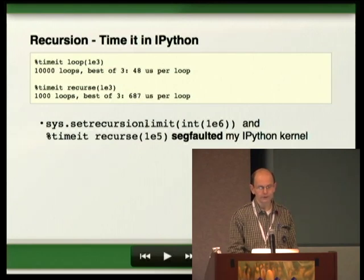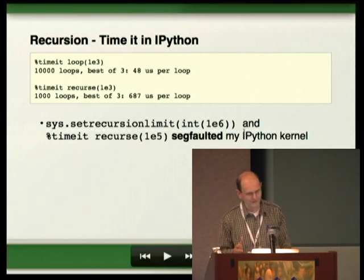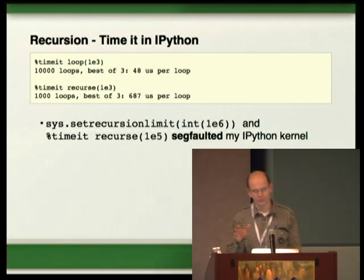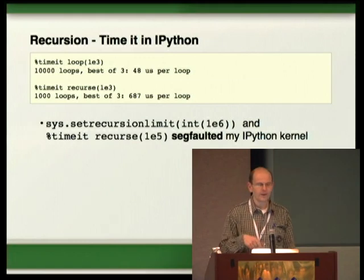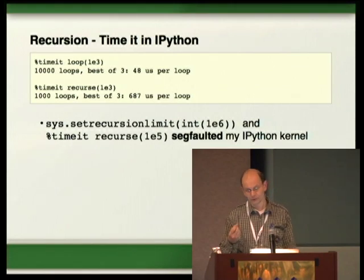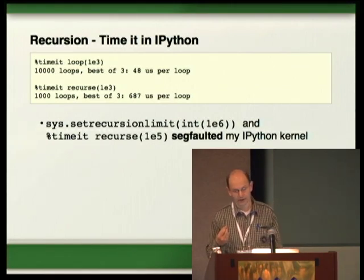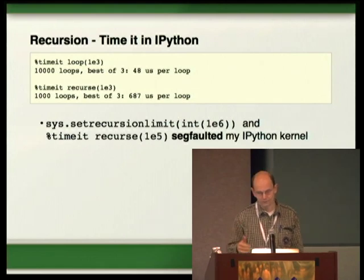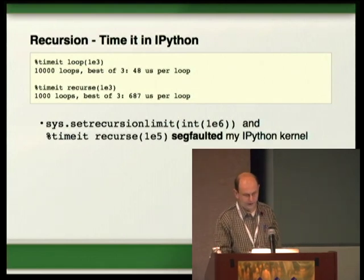Python has a recursion limit of 1,000. You can increase it. When I tried bumping the recursion limit up to a million, it crashed — Python very rarely does that. That tells you recursion is really not the way to solve problems in Python unless you have very recursive problems like tree nodes. Too many recursions are really not the way to go with Python.